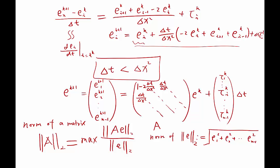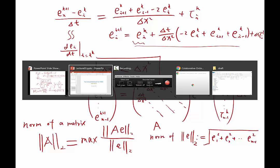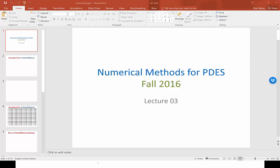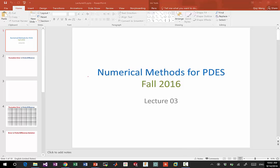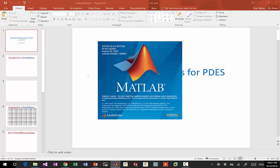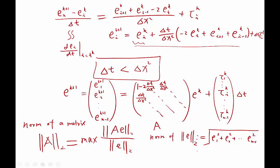So now, if the norm of the matrix is less than one, I'm fine because E^(k+1) is equal to A times E^k plus a truncation error. If the truncation error is small, then the E would be the same order of magnitude as the truncation error. It would not self-amplify. If the norm of the matrix is greater than one, no good. Even if I have a small delta t, even if I have a small tau, my E is going to amplify to infinity.